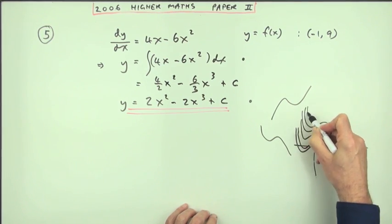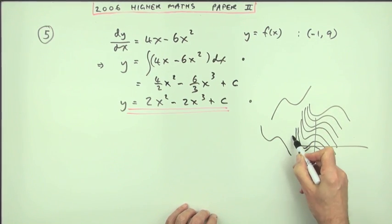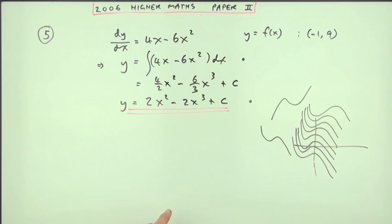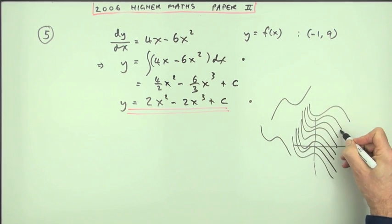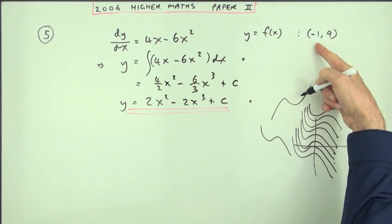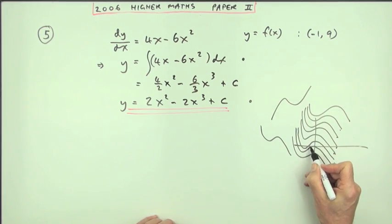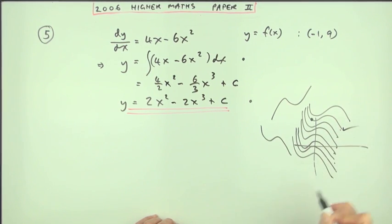Any of these curves could be the one that you want. And what this part here says, you want the one that goes through the point negative 1, 9, that goes through negative 1, 9. In other words, this is the one you want.